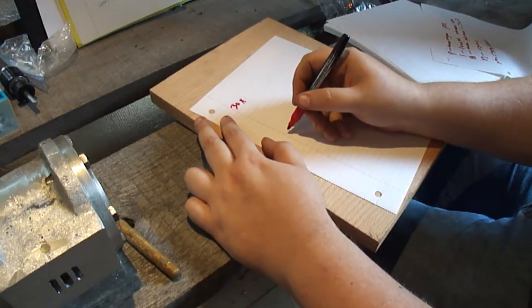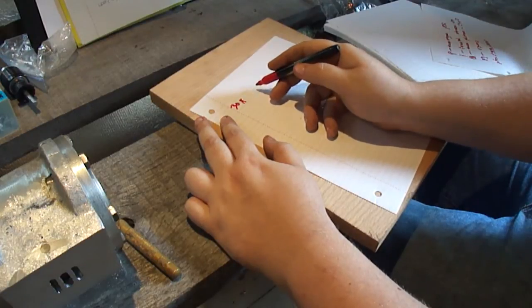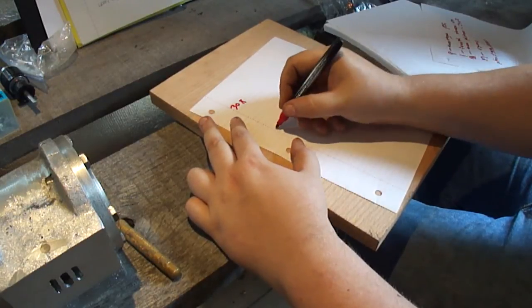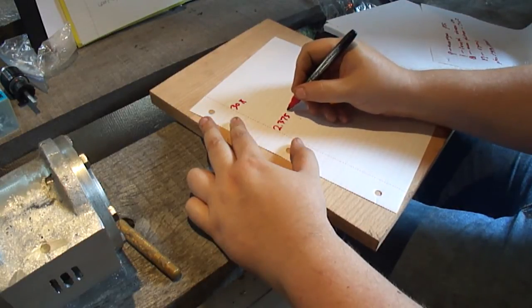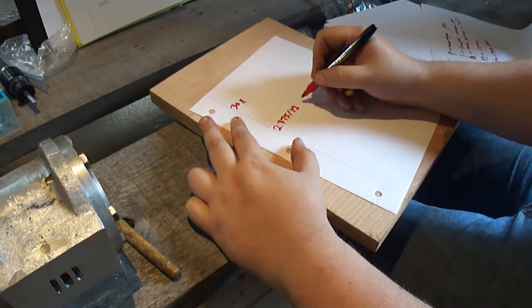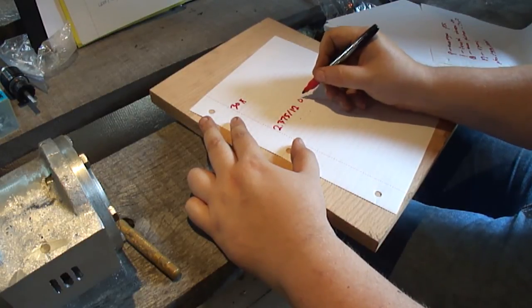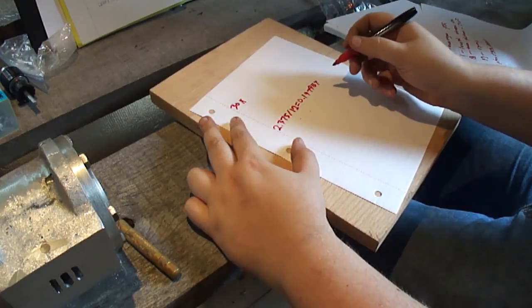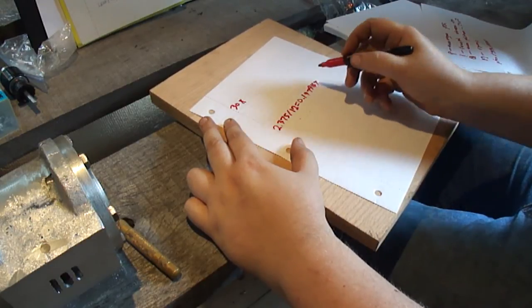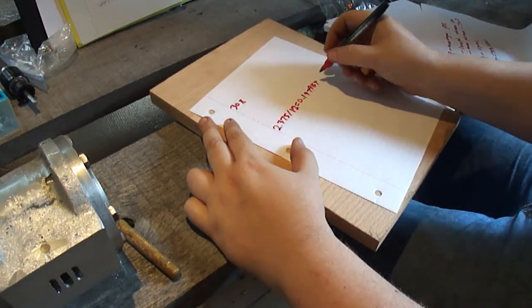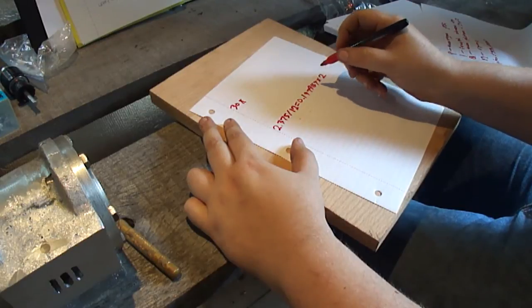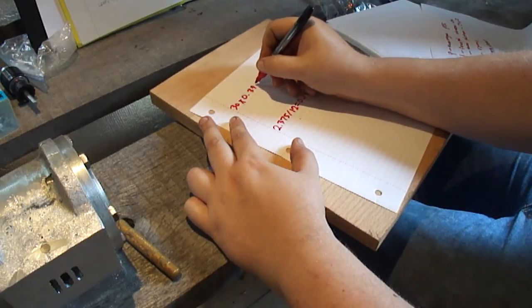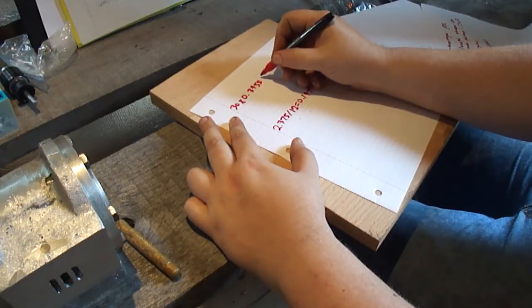The piston stroke length in feet, it is 2.375 divided by 12, which will come out to 0.1979167. Since it's a double acting, you want to double this. So it'll be times 2, which will come out to 0.395833.